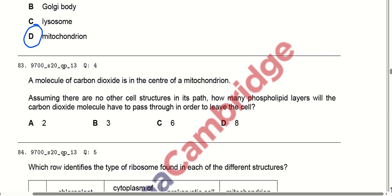A molecule of carbon dioxide is inside a mitochondrion. Assuming there are no other cell structures in its path, how many phospholipid layers must the carbon dioxide molecule pass through to leave the cell? It must pass through the double membrane of the mitochondria, then the double membrane of the cell, and if a cell wall is present, through that too. On a rough estimate, option C is correct — the carbon dioxide gas must pass through approximately six layers.